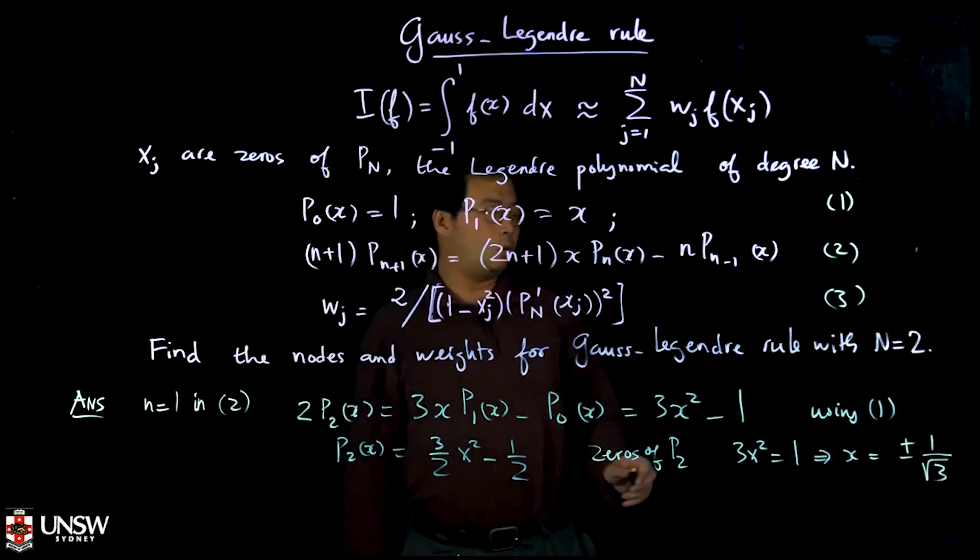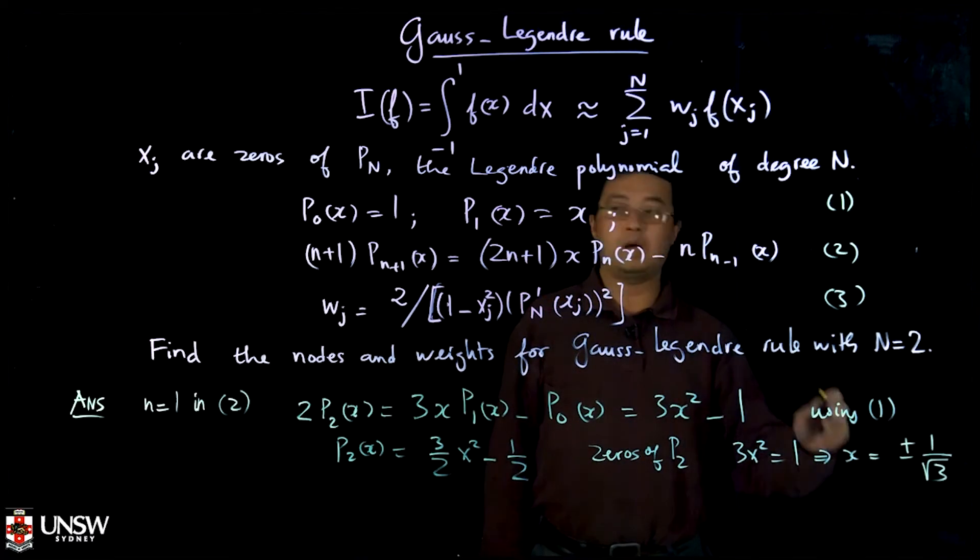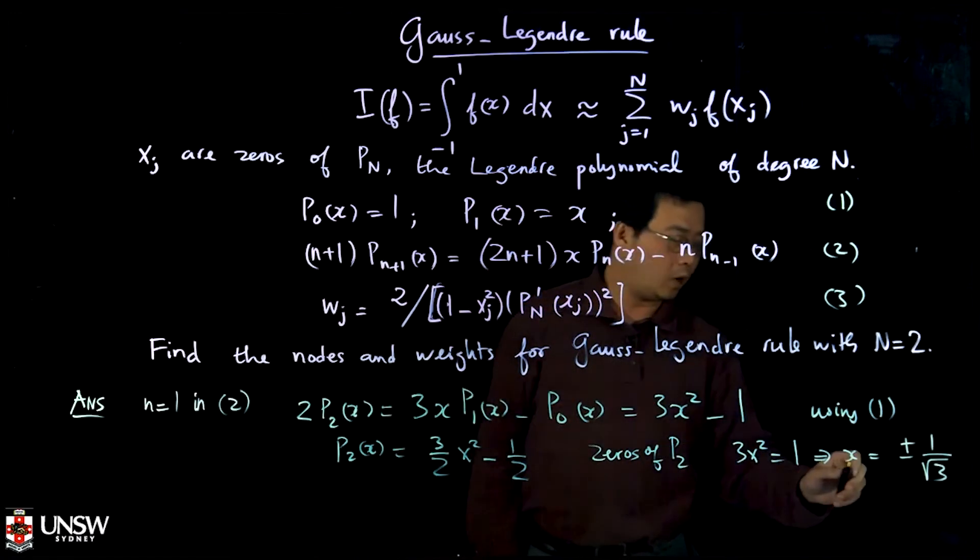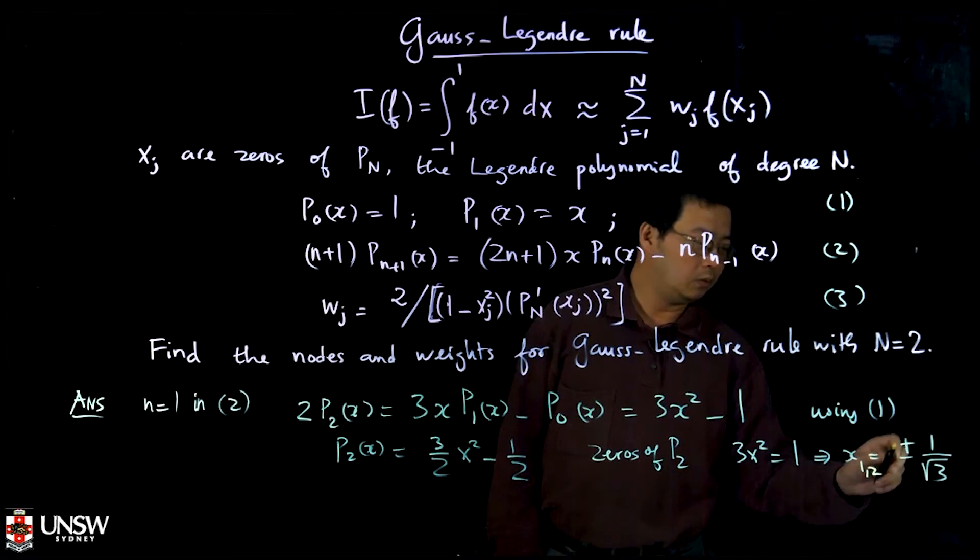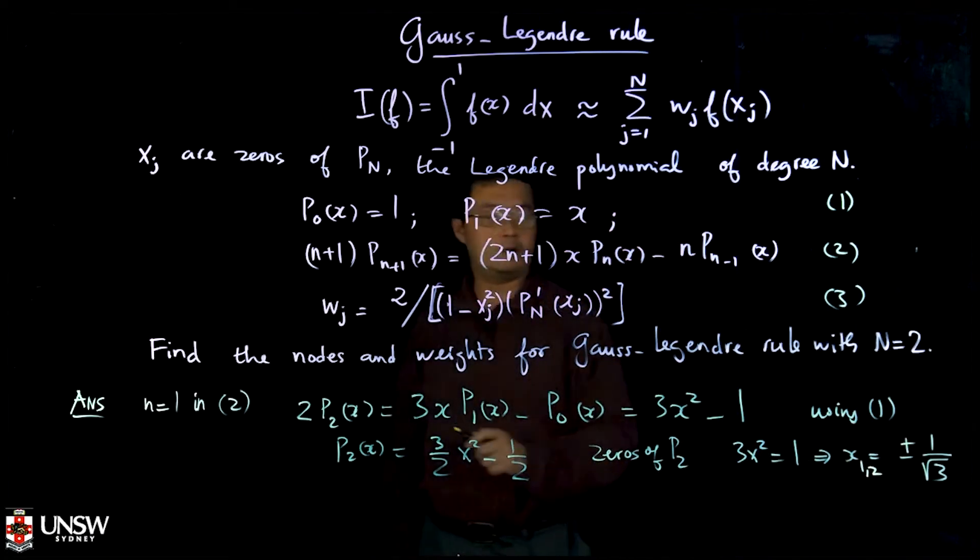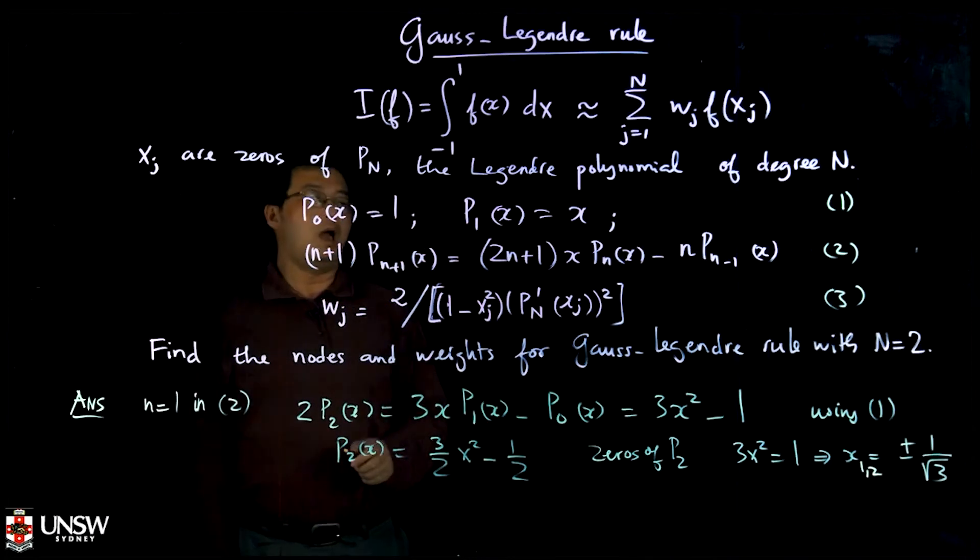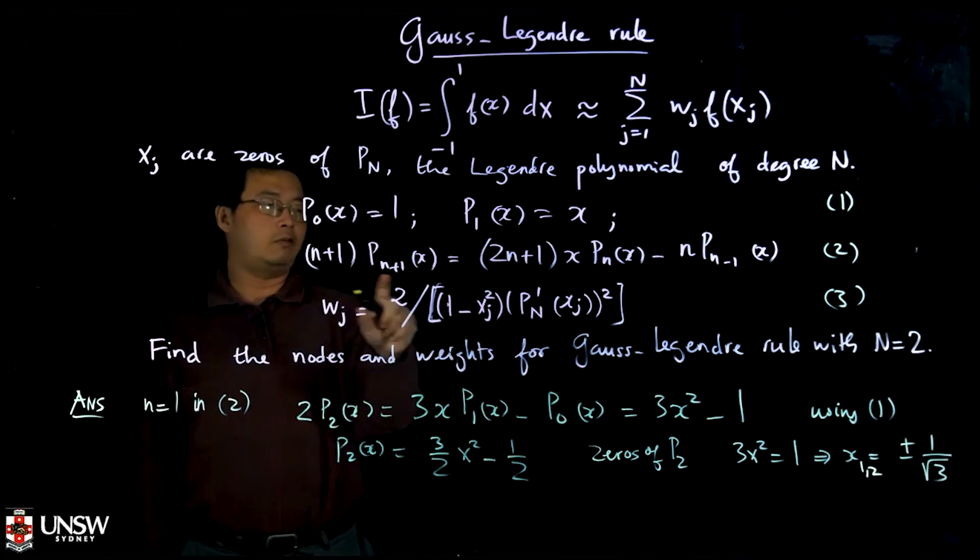Once you have this one, then this one becomes your quadrature points, so x₁ and x₂ is minus and plus one over root three. Now from that you can find the weight.